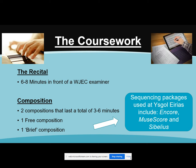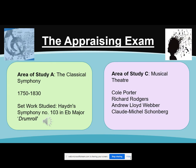The second composition is set to a brief that is sent to us by WJC, and there are normally four choices for you to decide which one you like best. This has to be more of a western classical style, so it has to follow rules about harmony and tonality such as cadences, phrasing, and melodic construction, which requires a little bit more in-depth learning.